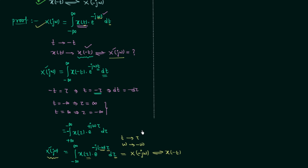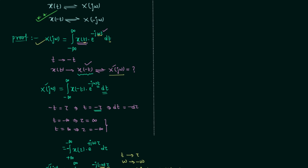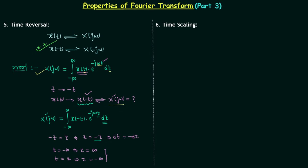Now we will move to property number 6: the time scaling property. If a time domain signal x(t) has Fourier transform X(jω), then after performing time scaling by amount a, the Fourier transform changes to (1/|a|)·X(jω/a). This is the time scaling property of Fourier transform. Remember this property and now we will prove it.